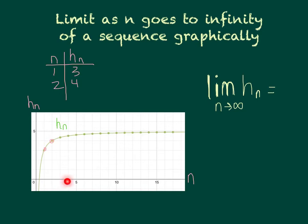So as n gets bigger, again, as we move to the right on the x-axis, we can see that our sequence values are getting bigger and bigger. But there sort of seems to be this invisible barrier right here at 5. And it doesn't actually look like we're ever going to cross 5. We're just getting closer and closer to it. So we would say that the limit of h sub n as n goes to infinity is 5. We're approaching 5.